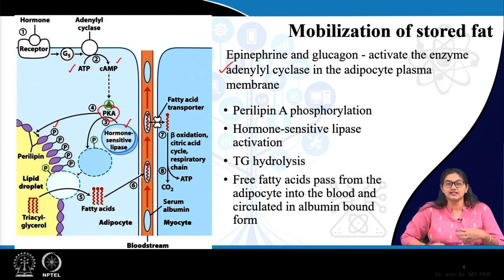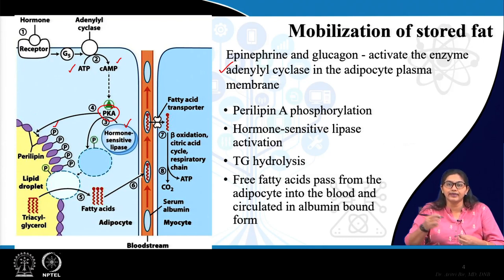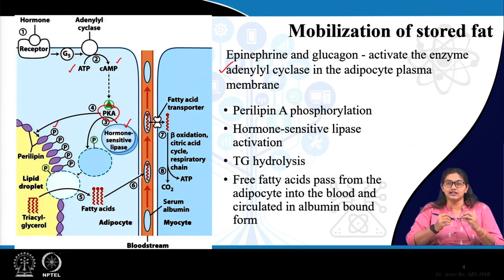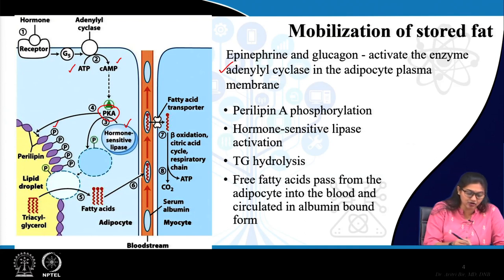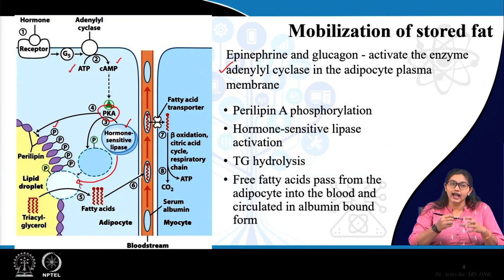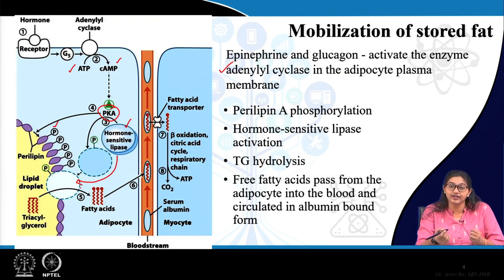Once hormone-sensitive lipase is phosphorylated, it is targeted for breaking down the stored triacylglycerol in the adiposome. Perilipines are proteins which separate or rather prevent access to the core triacylglycerols under conditions when breakdown is not required. When perilipine is phosphorylated, it attracts hormone-sensitive lipase and causes the movement of hormone-sensitive lipase towards the adiposomes, where the enzyme is activated and breaks down the triacyl core.